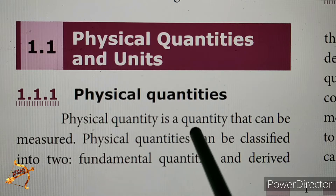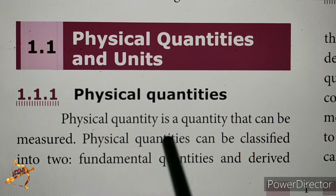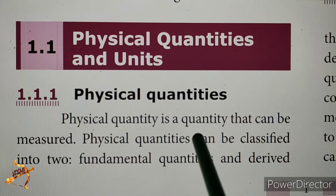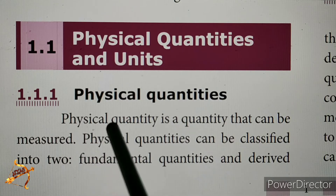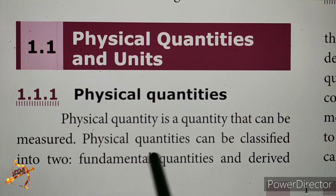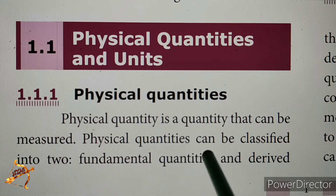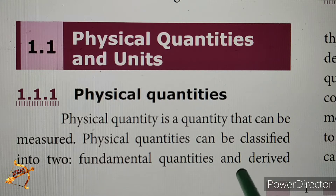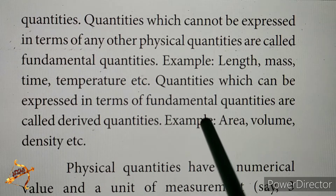A physical quantity is a quantity that can be measured. Physical quantities can be classified into two types: fundamental quantities and derived quantities.